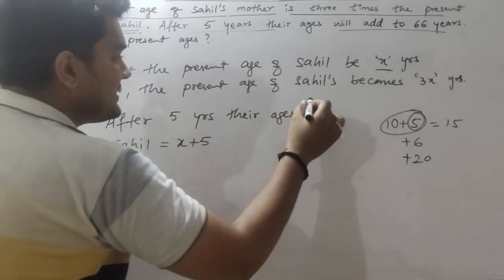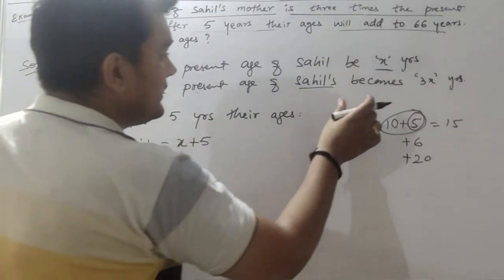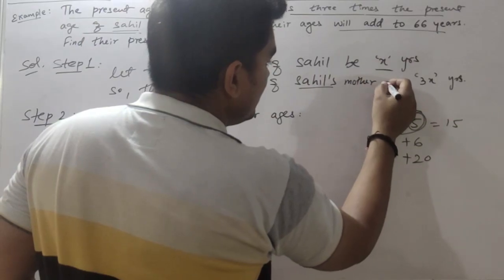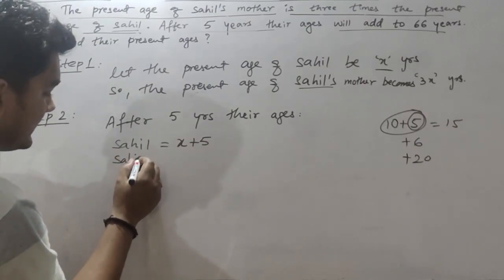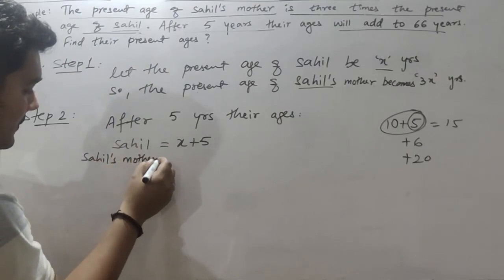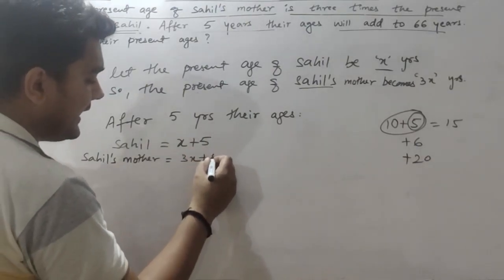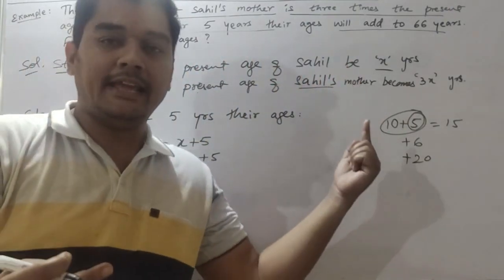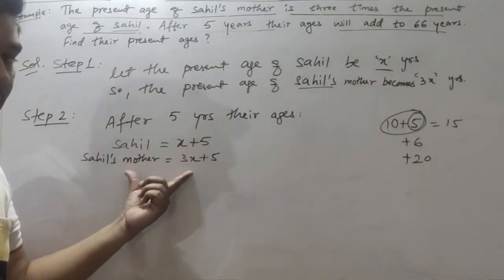The present age of Sahil's mother is 3X. After 5 years, we again add 5, so her age becomes 3X plus 5. So step one is to assume the present age, and step two is to find the ages after or before as given in the question.